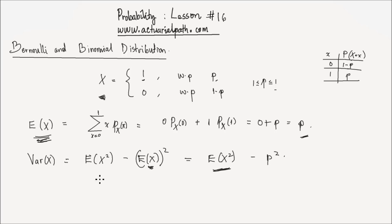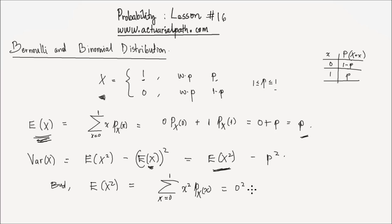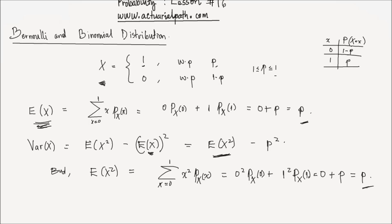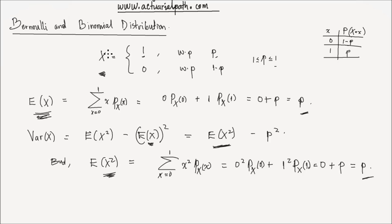Let's find the expected value of x squared. The expected value of x squared equals the sum for x from 0 to 1 of x squared times p of x. That equals 0 squared times the probability that x equals 0, plus 1 squared times the probability that x equals 1. That is 0 plus 1 times p, which is p. So the second moment of a Bernoulli random variable is again equal to p.